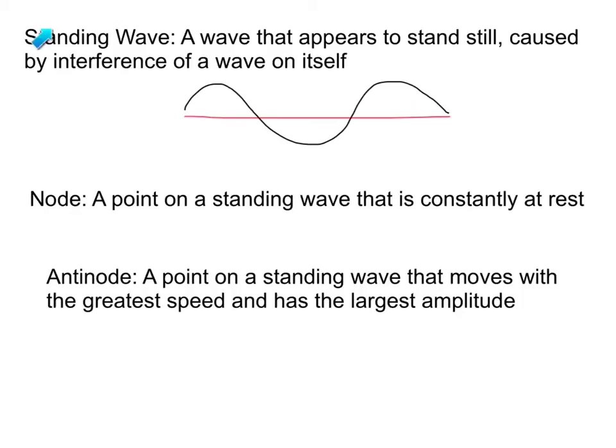We're also going to look at the standing wave. It's a wave that appears to stand still caused by interference of a wave on itself. This was another one that you were demonstrating in your group in the hall with the spring, where you were continuously sending a wave down. Once you got it going into its natural motion, you should have been able to see it get into this standing wave pattern.